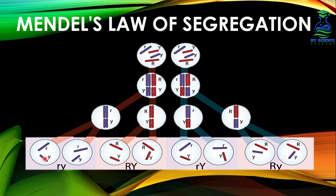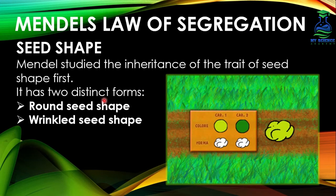Again, when these gametes unite during fertilization, these alleles of the gene pair will combine and form pairs again. So Mendel's law of segregation means the separation of alleles of a gene pair during gamete formation.